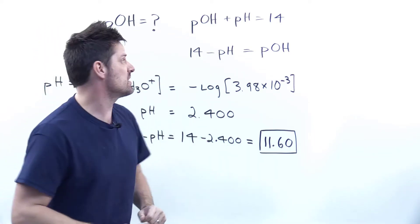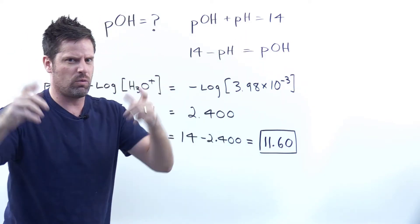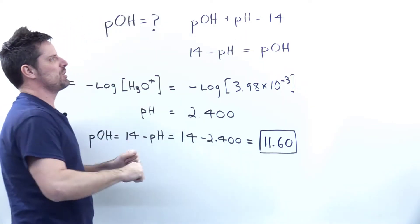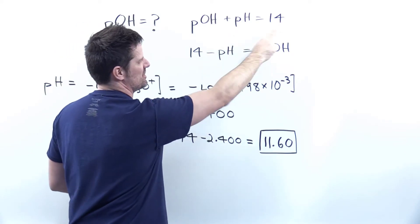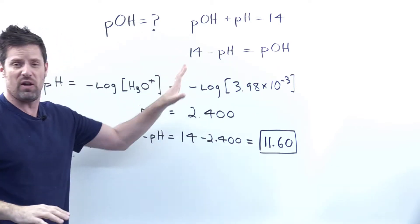Well, it helps to remember this equation that pOH plus pH equals 14. If we have that equation in our minds, using simple algebra, we should see that taking pH to the other side, pOH is equal to 14 minus pH. You follow that okay?